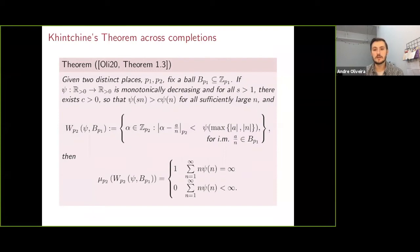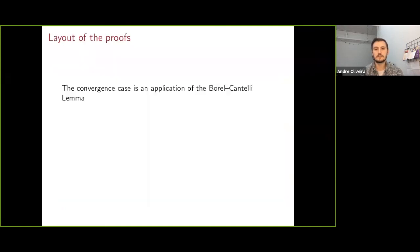What's the size of the set? Well, it turns out that this set is also going to have measure 0 or 1, and that we can totally determine it by the divergence or convergence of this series. And so we have another Khinchin-type theorem, and the proof of this Khinchin-type theorem has two parts.